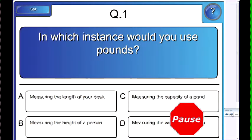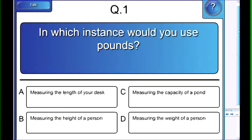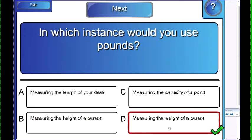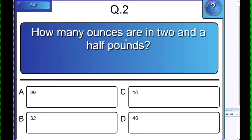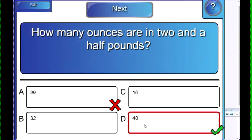Now, a final assessment. Let's see if you have this down. In which instance would you use pounds? Measuring the length of your desk? Measuring the height of a person? Measuring the capacity of a pond? Or measuring the weight of a person? A, B, C, or D? You got it right. How many ounces are in two and a half pounds? I know 16 plus 16. It has to be 36, right? It's not 36 ounces? Ooh, think again. I know 16 is one pound. 32 is two pounds. I'll go with D. Yep, there it is.